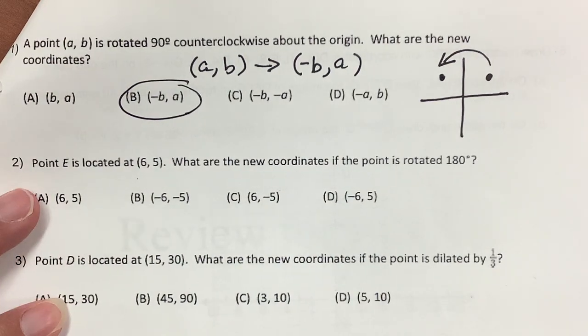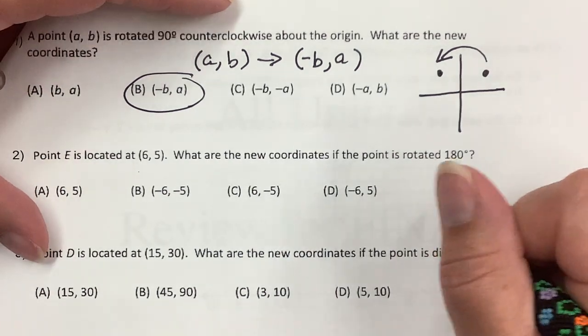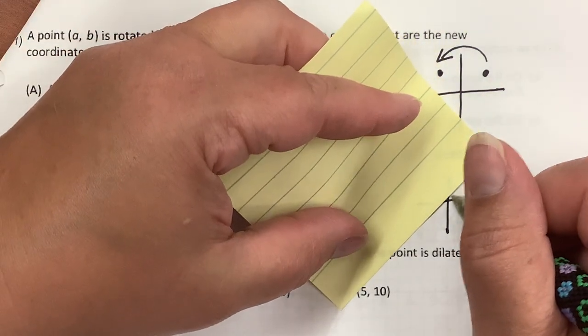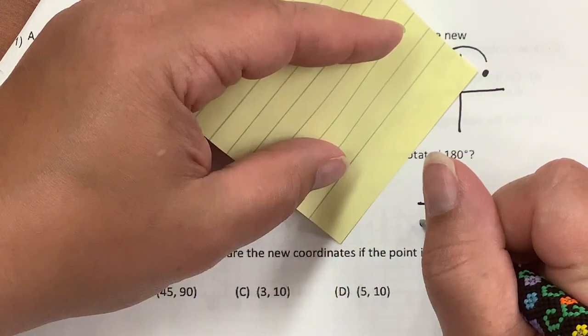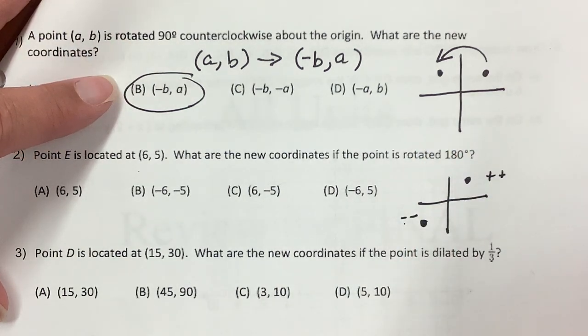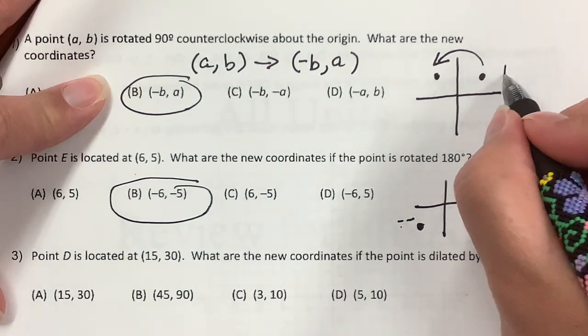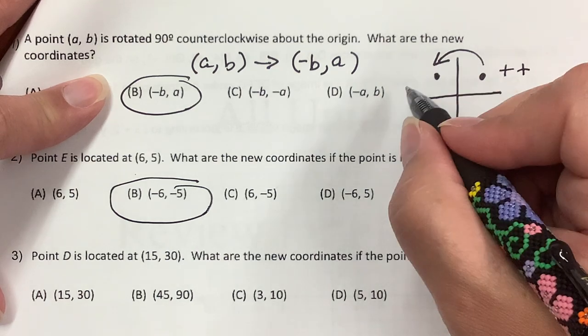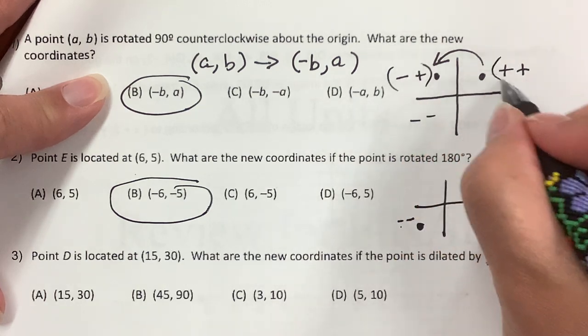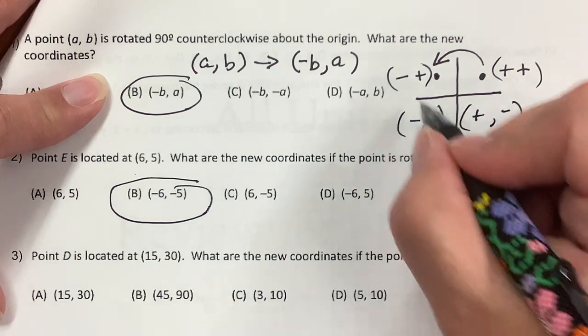Point E is located at 6, 5. What are the coordinates if it's rotated 180 degrees? I'm going to draw a little picture and put a dot here. 180 degrees is going to be in the opposite direction - over here. This is positive, positive. This is negative, negative. So they both become negative. It helps to know which way you're going.